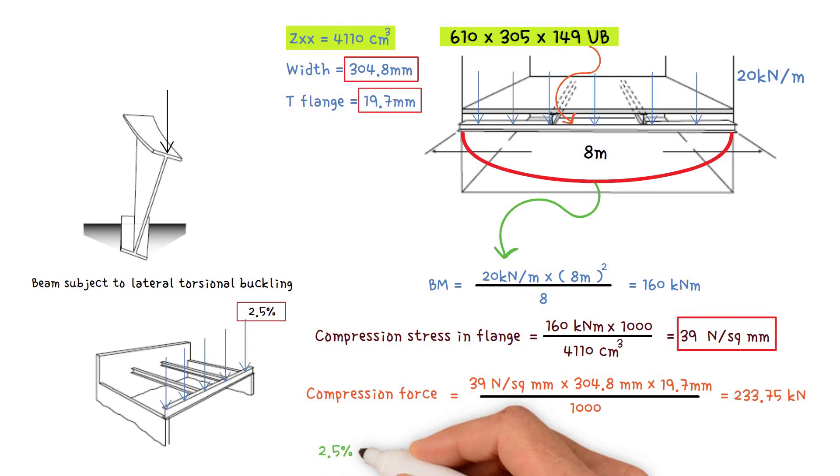Therefore, 2.5% of the compression force equals 2.5 divided by 100 times 233.75 kilonewtons. This gives us a value of 5.85 kilonewtons.